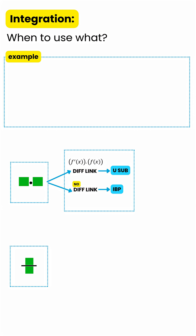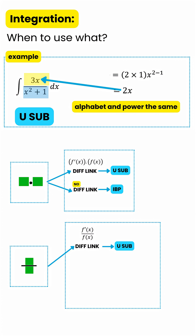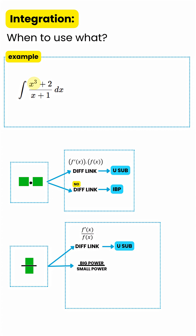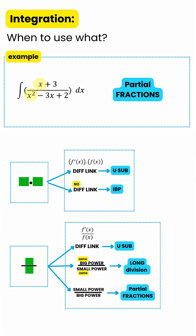When two parts are divided, first also look for a differentiation link. If differentiating the denominator gives you the numerator's letters and powers, use u-substitution. But if there's no differentiation link and the top power is greater than or exactly the same as the bottom power, use long division. If the numerator's power is smaller than the denominator's, use partial fractions to integrate.